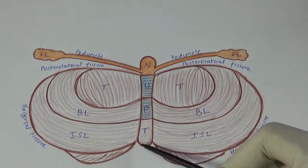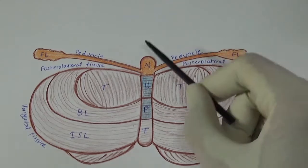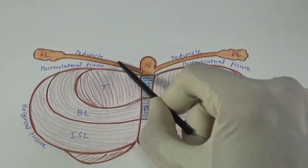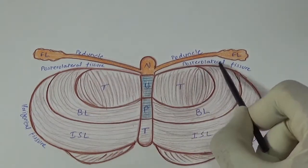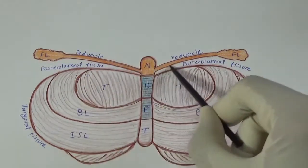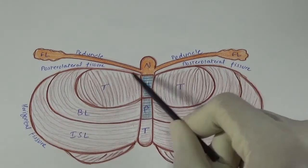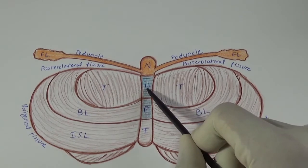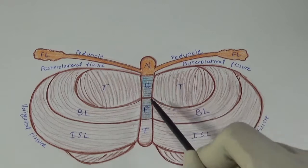The fissura prima and horizontal fissure are visible on this superior surface diagram. Turning to the inferior surface and its subdivisions, the vermis and cerebellar hemispheres are shown, with the nodule and two flocculi connected by the peduncle of the flocculus. The posterolateral fissure separates this region from the rest of the corpus cerebelli.